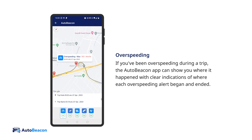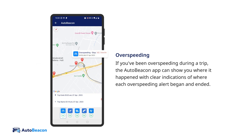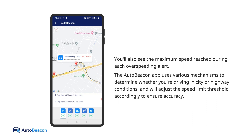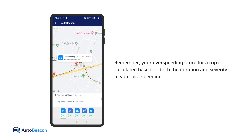Overspeeding: if you've been over-speeding during a trip, the AutoBeacon app can show you where it happened, with clear indications of where each over-speeding alert began and ended. You'll also see the maximum speed reached during each alert. AutoBeacon uses various mechanisms to determine whether you're driving in city or highway conditions and will adjust the speed limit threshold accordingly. Your over-speeding score for a trip is calculated based on both the duration and severity of your over-speeding.